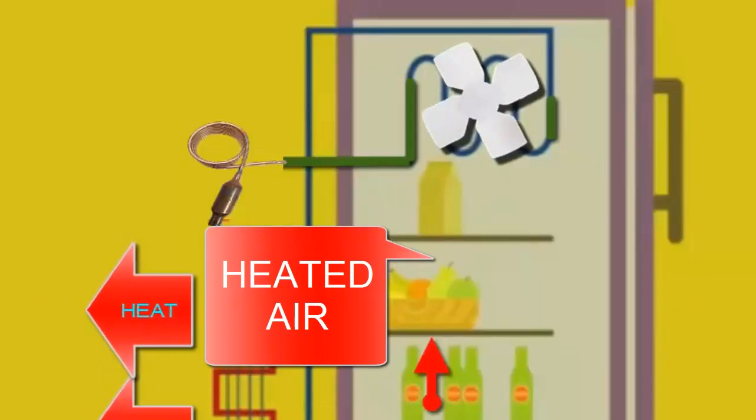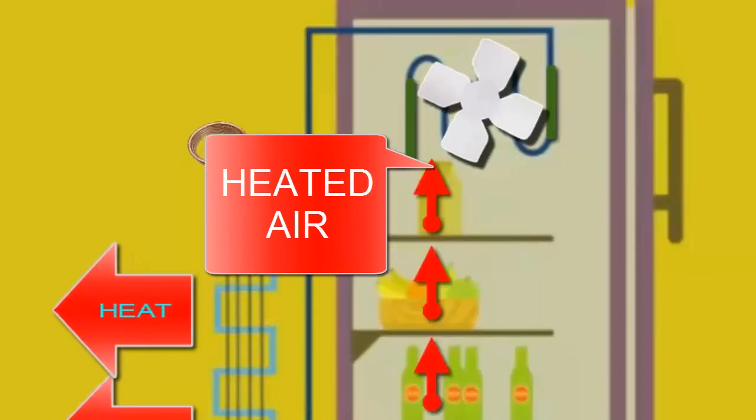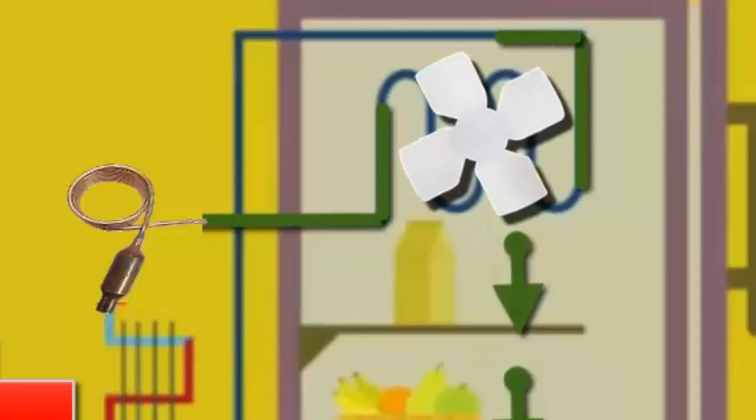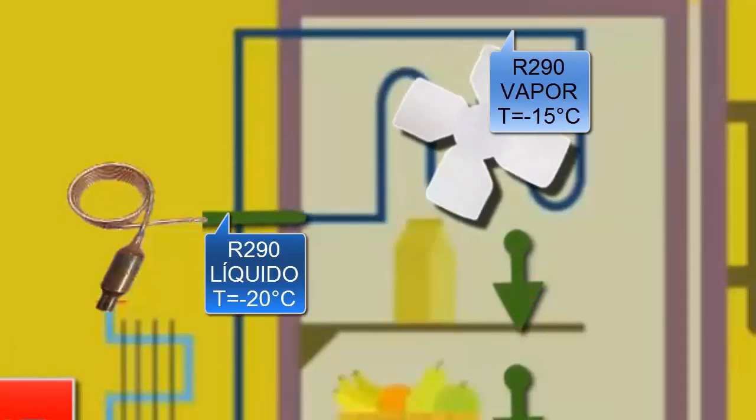The heat from the food transfers to the R290 refrigerant in the evaporator, causing the refrigerant to progressively change from a liquid to a gaseous state.